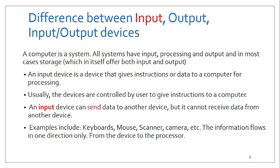One main role when talking about computer organization is data movement. This data movement transforms data from the raw aspect into some kind of information that makes sense. Input devices have one major role, which is to send signals to other parts of the computer — more specifically the CPU. There is no other part of the computer that is able to send data; it's only the input devices.